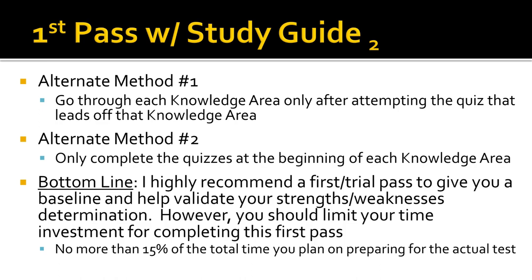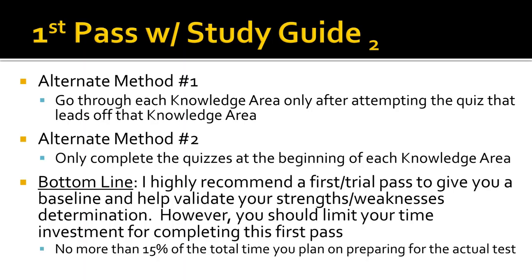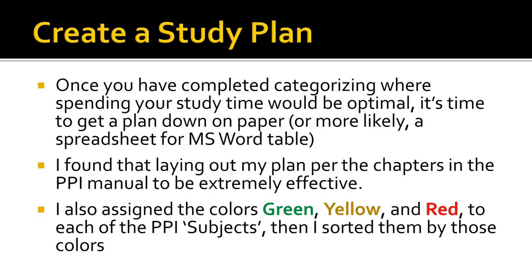There are many alternative methods. Alternative method one is what PPI actually suggests: go through each knowledge area only after attempting the quiz or evaluation tests at the beginning of each knowledge area. Alternative method two, a more aggressive one, would be to only complete the quizzes at the beginning of each knowledge area and then go and try to test yourself. Obviously that means you'll need to spend some time after those quizzes to go back and cover areas you didn't fully understand. I highly recommend this first initial trial pass to give you a baseline, but limit your time investment to no more than about 15% of your total time.